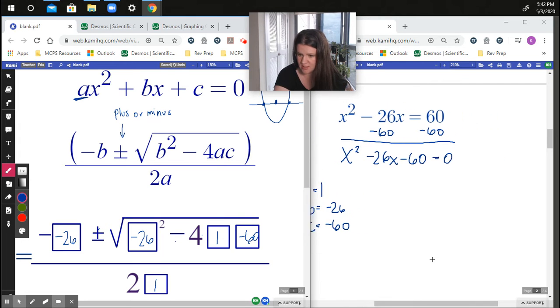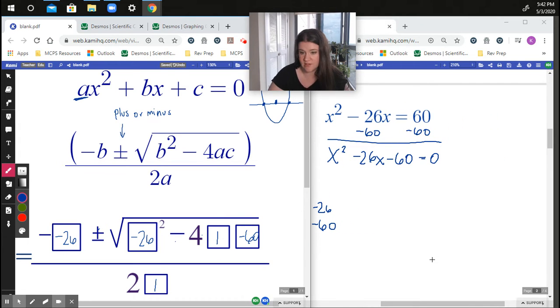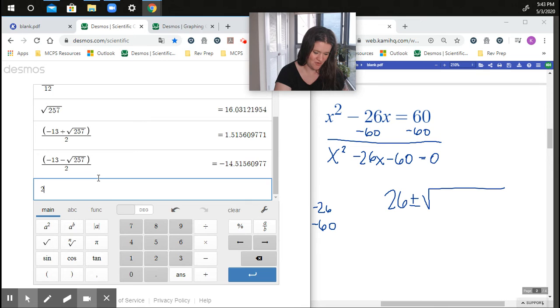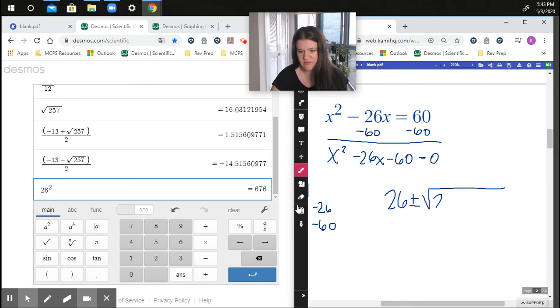Alright, so I'm going to scroll this just a little bit over because I don't need that factoring stuff because it didn't work. And I'm going to clean it up. Negative negative becomes a positive 26, plus or minus the square root of 26 squared. I can't do it, but that's my other video. 26 squared is 676.